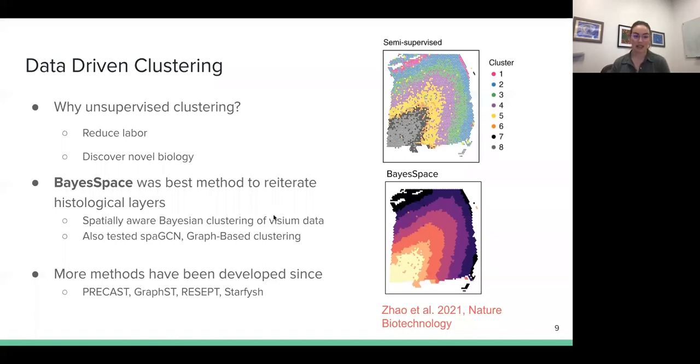So in this work, we had tested SPA-GCN and graph-based clustering, as well as BayesSpace. We found that BayesSpace was the best method to reiterate those known histological layers. So that is a spatially-aware Bayesian clustering that we applied to our Visium data. And since we did this work, some more methods have been developed, as this is a rapidly evolving field. So these methods include PRECAST, GraphST, RESEPT, and Starfish. And we hope to explore those methods in future spatial work.